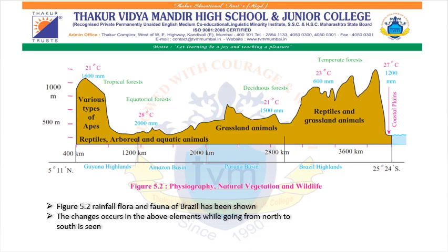Figure 5.2 shows us physiography, natural vegetation and wildlife — that is, the rainfall, flora and fauna of Brazil. Changes occur in these elements while going from north to south. The latitudinal extent shown is 5 degrees 11 minutes north to 25 degrees 24 minutes south. In the Guyana Highland, the height is about 1000 meters, rainfall is 1600 millimeters, and the temperature is about 21 degrees Celsius.